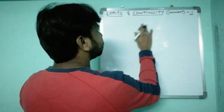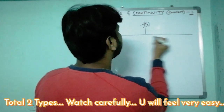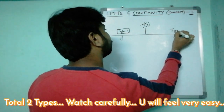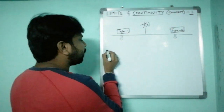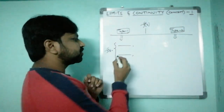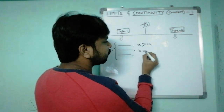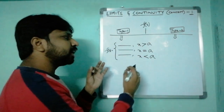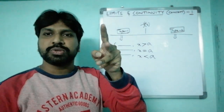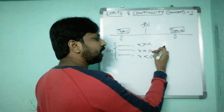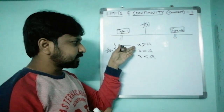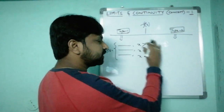They are going to give the question as f(x), and this f(x) may be in two types. In Type 1, the question will give f(x) with three conditions: x greater than a, x equals a, and x less than a. Sometimes they mix these into two conditions, like x greater than or equal to a and x less than a, or x greater than a and x less than or equal to a. This is Type 1.